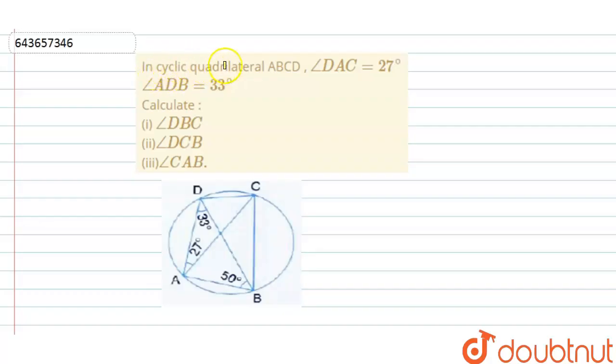Hello everyone, the question says that in cyclic quadrilateral ABCD, angle DAC is 27 degrees, angle ADB is 33 degrees. Calculate angles DBC, DCB, and CAB.